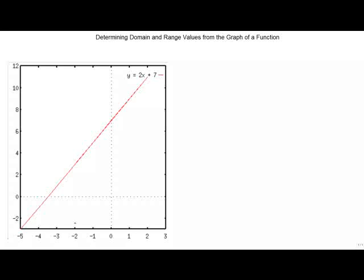We're going to determine the domain and range values from the graph of a function. Here we have the graph of a function y equals 2x plus 7, which is also known as f of x equals 2x plus 7.